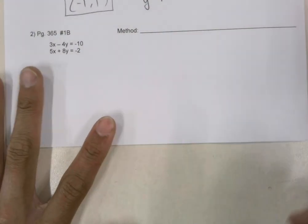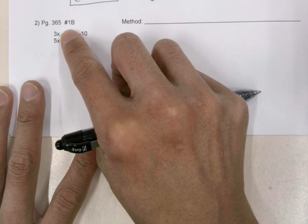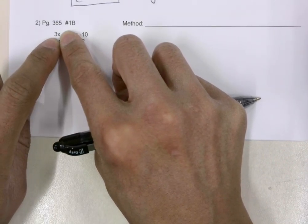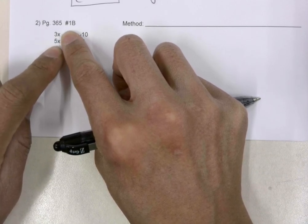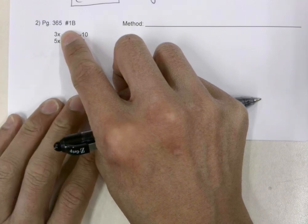Let's go ahead and do that. Looking here, you can see that 3x and 5x, we could multiply the 3x by 5, and we can multiply the 5x by 3, and then we can use subtraction.